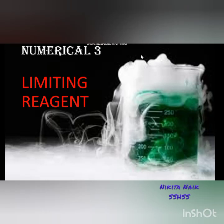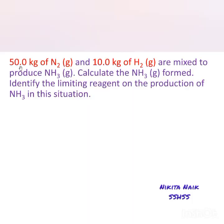Numerical 3: Limiting Reagent. The question is: 50 kg of N₂ (gaseous) and 10 kg of H₂ (gaseous) are mixed to produce NH₃, that is ammonia, in the gaseous form. Calculate the NH₃ formed and identify the limiting reagent in the production of NH₃ in this situation.